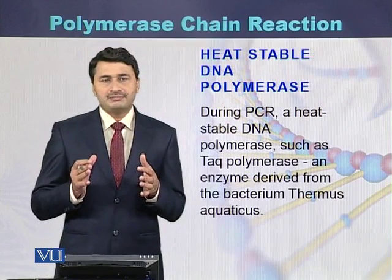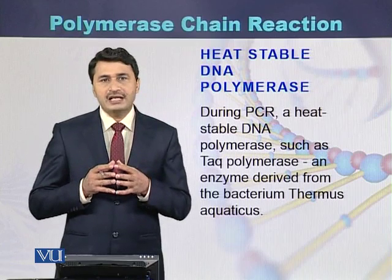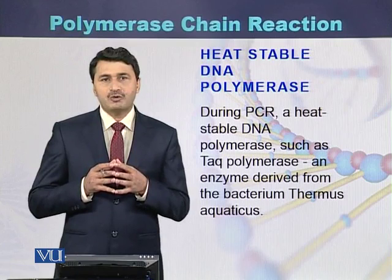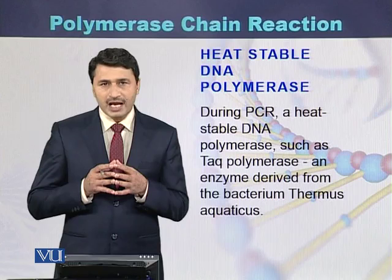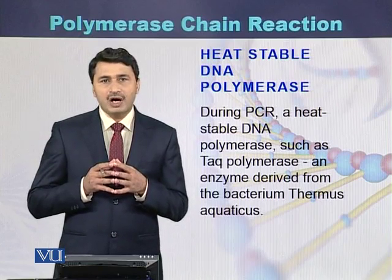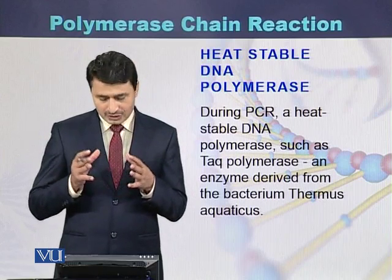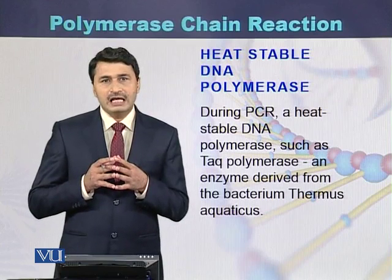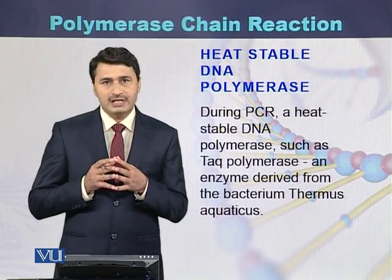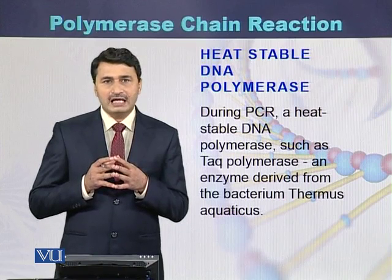During PCR, a heat-stable DNA polymerase is used. This DNA polymerase was initially identified and purified from a bacterium found in hot springs. The name of that bacterium is Thermus aquaticus. The first DNA polymerase used for PCR was purified from Thermus aquaticus.